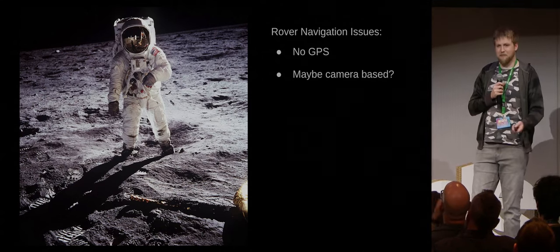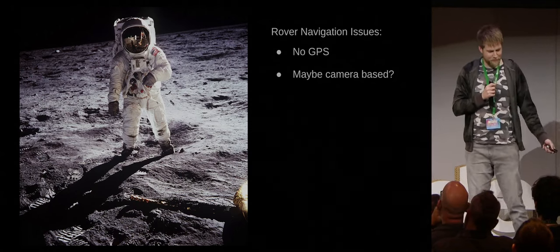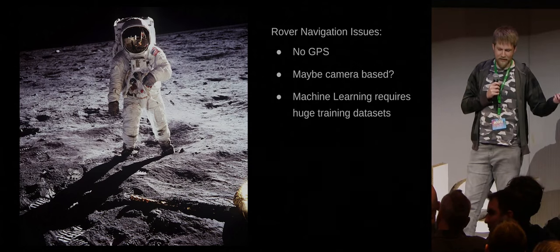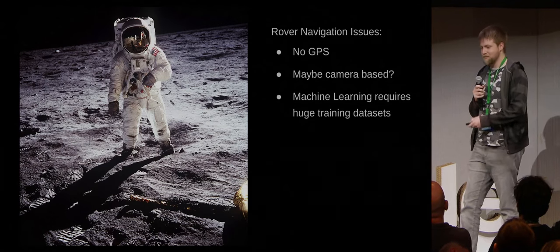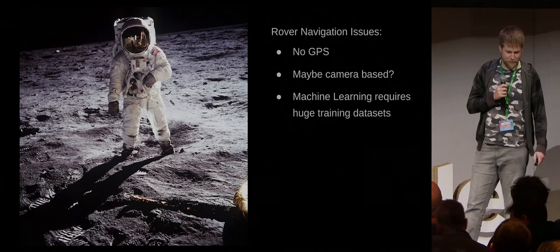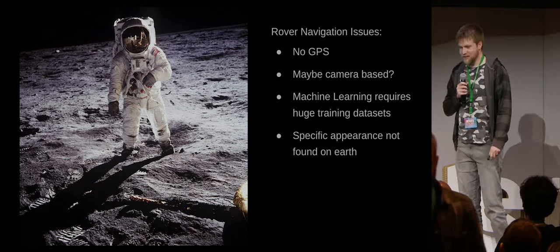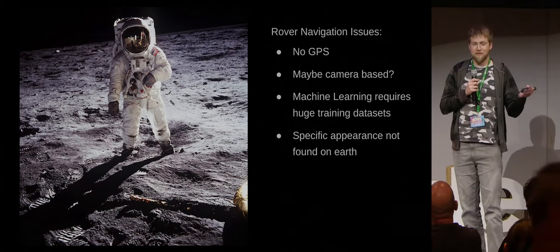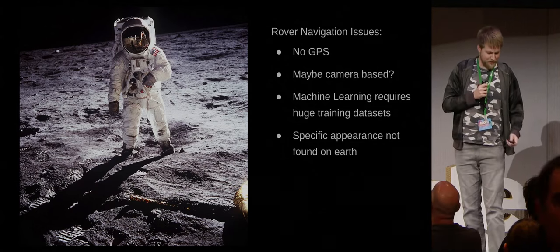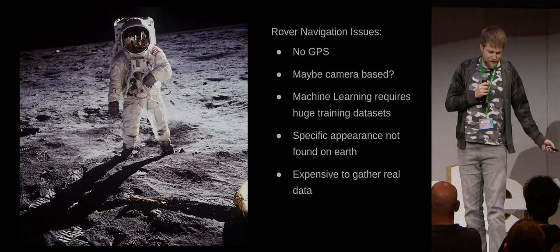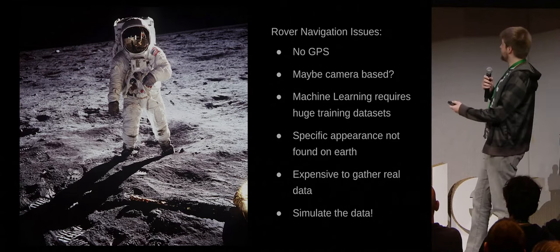Maybe it has cameras. So on earth we have self-driving cars — maybe on the moon they're the same. Maybe they use cameras for image-based navigation. But image-based navigation requires a lot of data to train those algorithms to be able to figure out how to move around. And the moon doesn't actually look like the earth — there's no atmosphere, so you don't have a sky, there's not a lot of fill light, you have the bright sun and your shadows are very dark. Obviously it's expensive to go there and gather the data, so unfortunately we have to simulate the data.